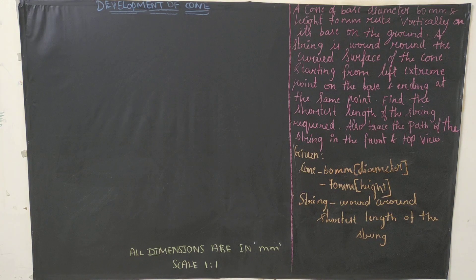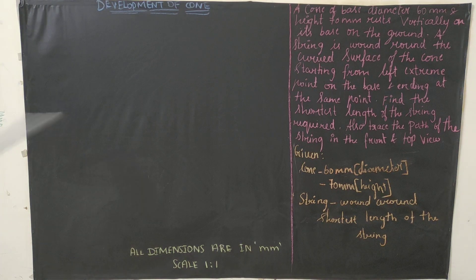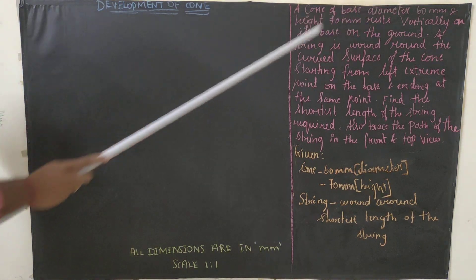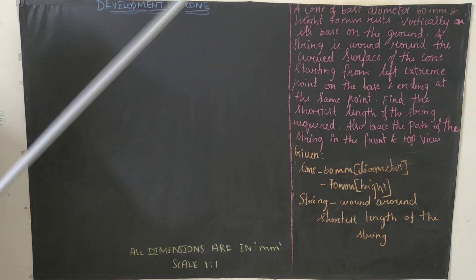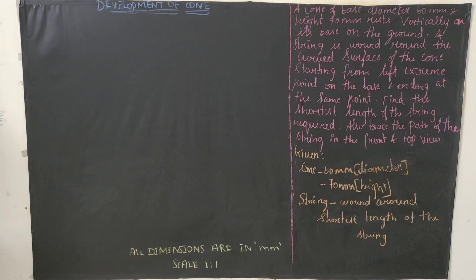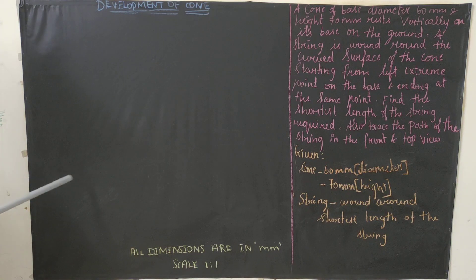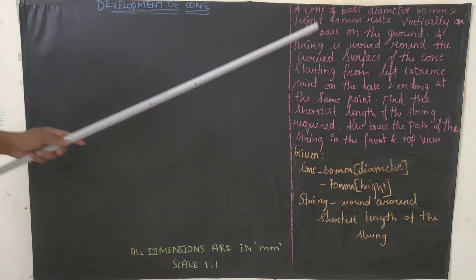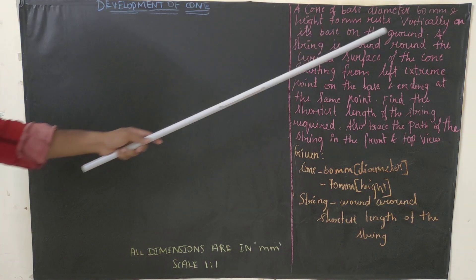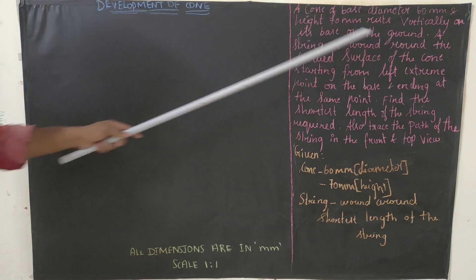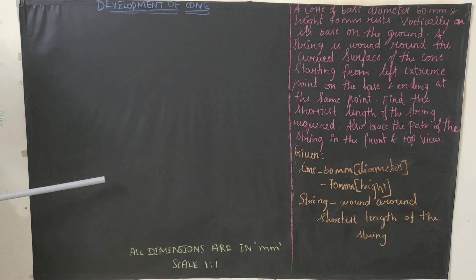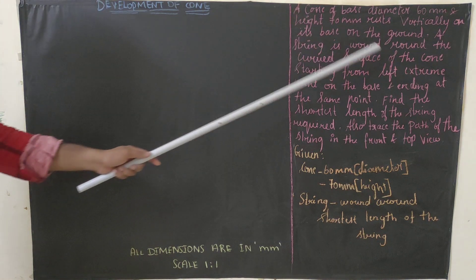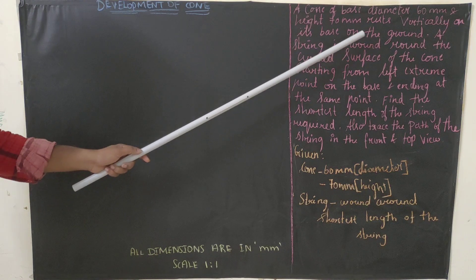Regarding the base diagram, the solid given in the question is a cone of base diameter 60 mm and height 70 mm. Since the solid is a cone, the base diagram will be a circle. The cone is vertically resting on its base on the ground, so we're going to draw the base diagram in HP.